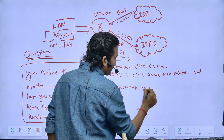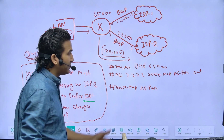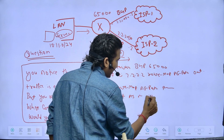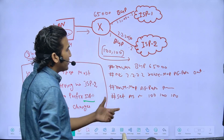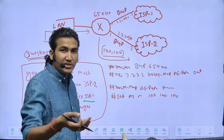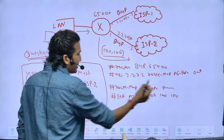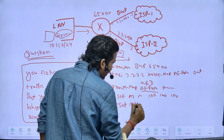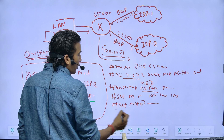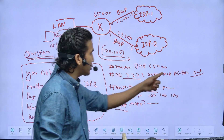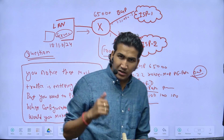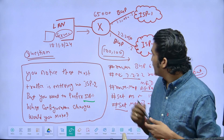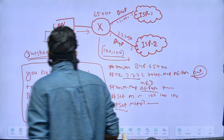Then define the route-map: route-map aspath permit with a sequence number, and use the set metric command to set a higher metric value. Apply this route-map to the neighbor in the OUT direction only. Direction is very important here — most people are unclear. For inbound traffic, apply AS path prepend or MED in the OUT direction to prefer ISP 1.